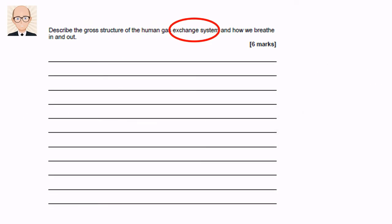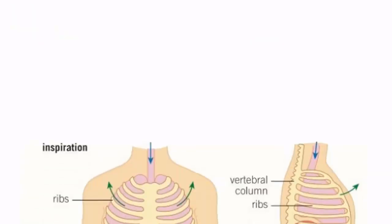The second part of the question asks for a description of how we breathe. Unless you're going to draw a series of diagrams this time, personally I would try and write this out in words rather than using diagrams. Let's look at the process first with a series of diagrams before we start to describe what's happening.